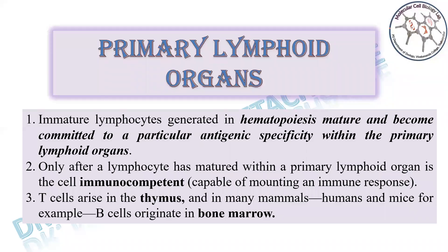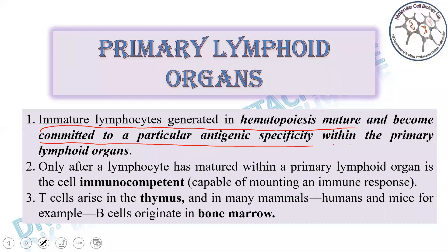The primary lymphoid organs are where immature lymphocytes are generated and become committed to a particular antigenic specificity. Only after a lymphocyte has matured within a primary lymphoid organ does it become immunocompetent — capable of mounting an immune response. For B lymphocytes, development and maturation occur in bone marrow. For T lymphocytes, development is in bone marrow but maturation is in the thymus.